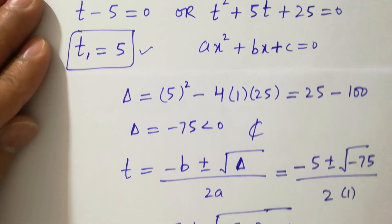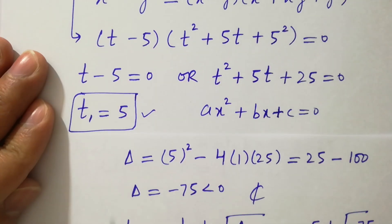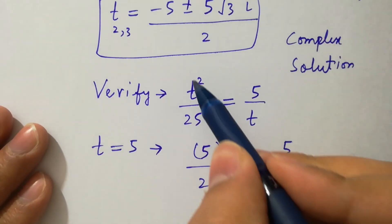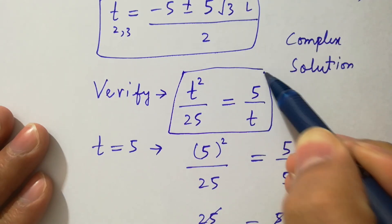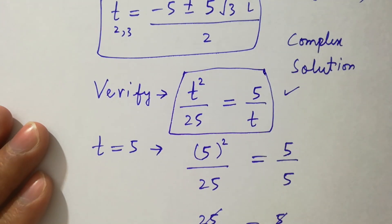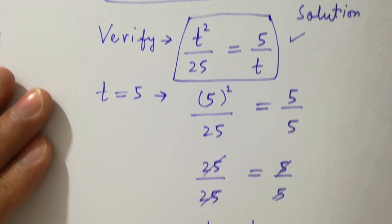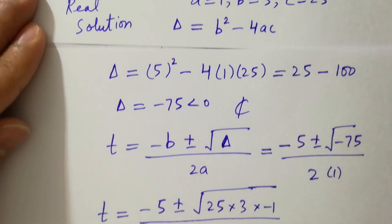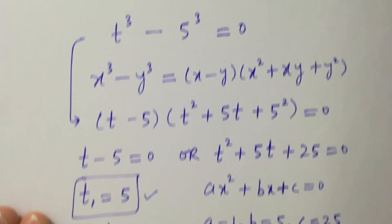This shows that the value t equals 5 satisfies the equation t squared over 25 equals 5 over t. Thanks for watching this video — please subscribe to this channel to get notifications of my new videos.